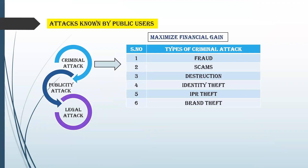There are many types of attacks that we can see when considering the security of a network. The types of attacks are generally divided into different kinds — attacks known by the public users, technical types, and practical types. Attacks known by the public user are of three types: criminal attack, publicity attack, and legal attack.